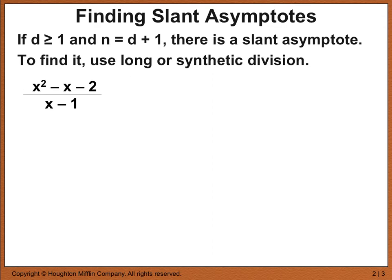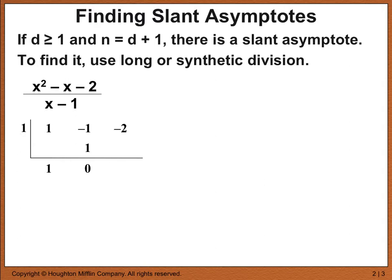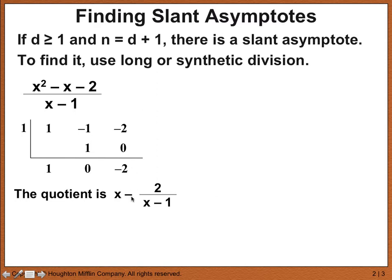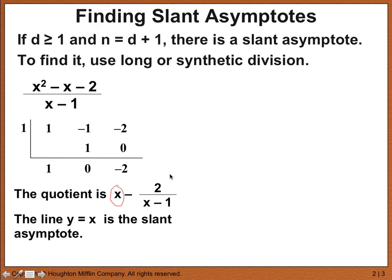The next example is x squared minus x minus 2 over x minus 1. We use synthetic division because we have the convenient form x minus 1. This 1 is because we have 1x squared, negative 1 because we have negative x, and negative 2 is the constant. We carry out the synthetic division and find a remainder of negative 2. The quotient is x, with no constant term, and remainder negative 2 over x minus 1. Therefore the slant asymptote is y equals x.